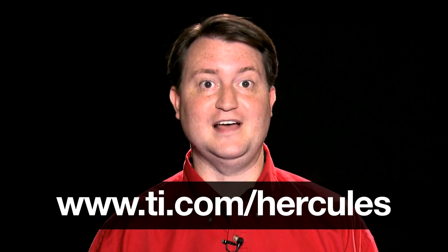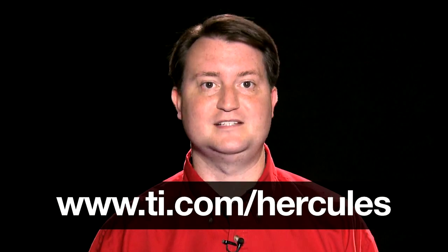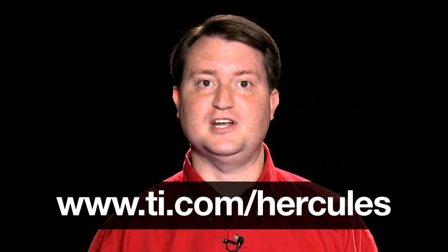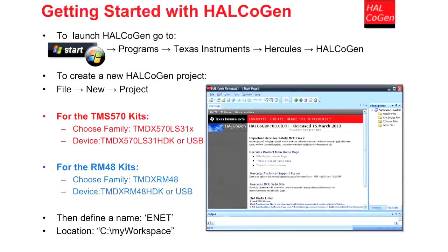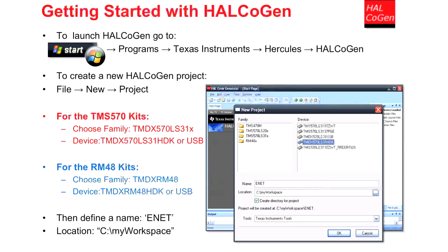I am now going to demonstrate how to configure the EMAC and SCI modules using Halcogen. If you do not already have Halcogen, you can download it from the tools and software area on the website ti.com/Hercules. Halcogen can also be installed directly from the software DVD included in all Hercules development kits. To start the Halcogen application, go to the Windows Start menu and select Programs, Texas Instruments, Hercules, Halcogen. To start a new project, select File, New Project. Once the new project window has opened, the device family and specific device must be selected. Then the project name and storage location for generated code can be entered.